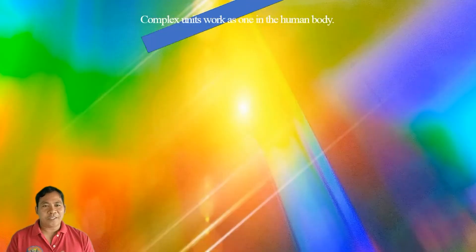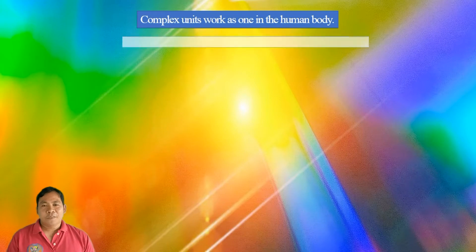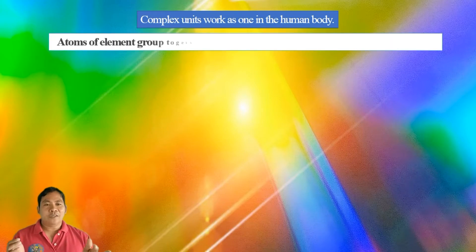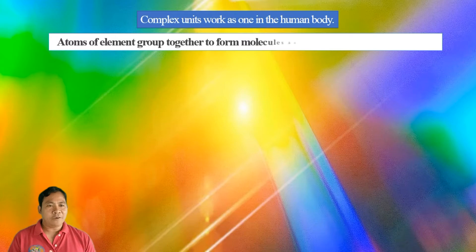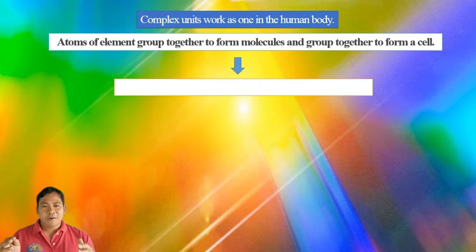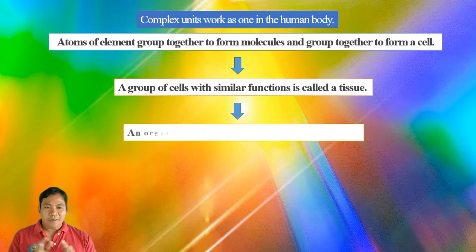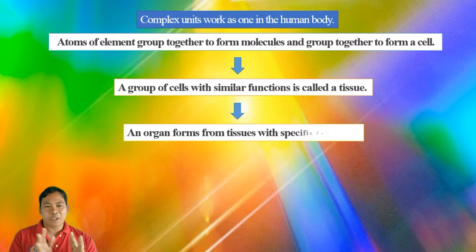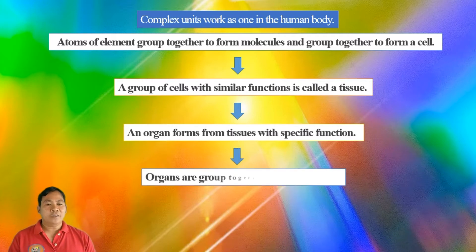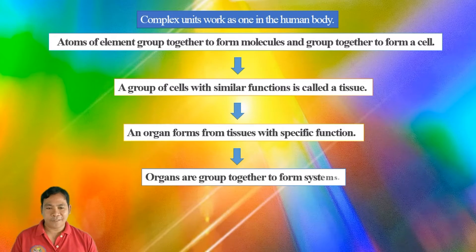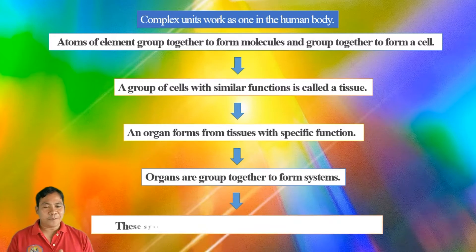To recap: the human body is made up of complex units that work as one. Atoms form molecules, which group together to form a cell. A group of cells with similar functions is called a tissue. An organ forms from tissue with a specific function. Organs are grouped together to form systems, and these systems work together in the body of an organism.